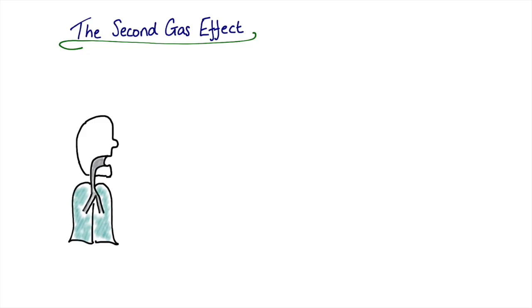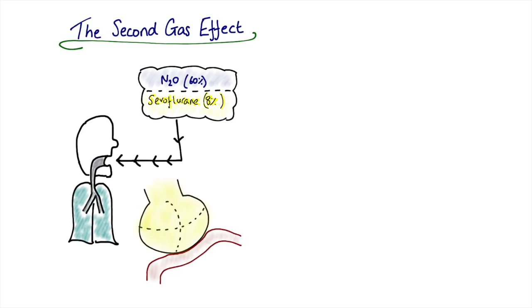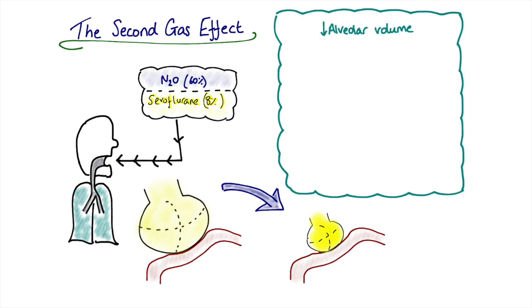To understand that, we can go back to our patient, but this time we're delivering nitrous oxide in addition to a second volatile anesthetic agent, so we've got some sevoflurane at eight percent here as well. If we focus in again on the alveoli and the pulmonary capillary, for all the reasons we've just talked about, delivering high concentration of nitrous will see a reduction in the alveolar volume, and this is the concentration effect. Except in this case, we're not just concentrating the other normal gases—nitrogen, oxygen, carbon dioxide—we're also concentrating our inhalational anesthetic agent, our second gas. So we see a reduction in alveolar volume purely as a consequence of the concentration effect, but because of that we'll see an increase in concentration of the second gas, which in this case is sevoflurane.